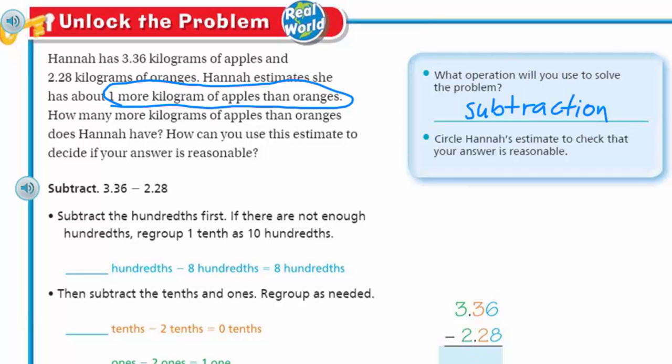Now it says circle Hannah's estimate to check that your answer is reasonable. Her estimate is that there's 1 more kilogram of apples than oranges. Sometimes I ask myself why do we start in the hundredths place? If we're subtracting a number, why do we start way to the right? Well we always begin at the least or rightmost place of the place value numbers. It makes it easier for us as we move left.